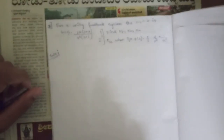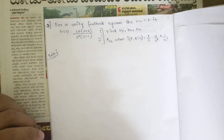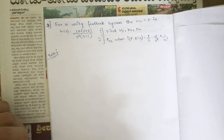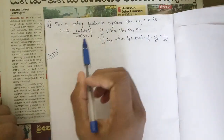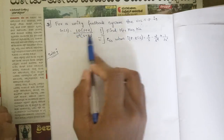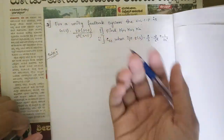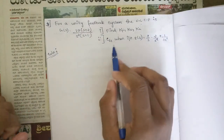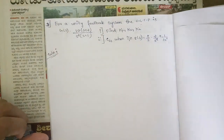In the last session we solved problems related to type one and type two systems and the positional, velocity, and acceleration error coefficients. We continue with two more important problems. This is the third problem: for a unity feedback system, the open loop transfer function is G(s) = 10(s+2) / [s²(s+1)]. Since H(s) = 1, we need to find Kp, Kv, and Ka, and also the steady-state error when the input R(s) = 3/s − 2/s² + 1/(3s³).